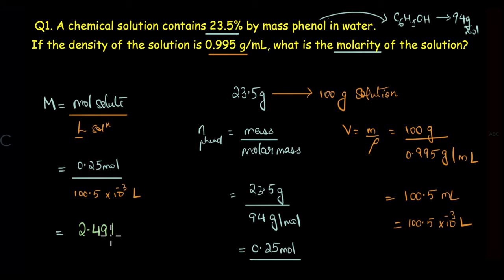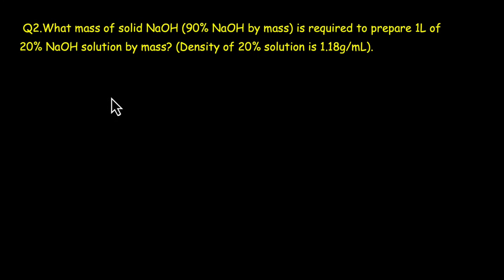Let's now look at a slightly trickier question. Here the question says: what mass of solid NaOH (90% NaOH by mass) is required to prepare 1 liter of 20% NaOH solution by mass? The density of the 20% solution is given here.